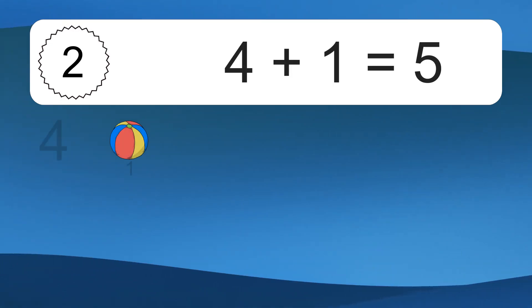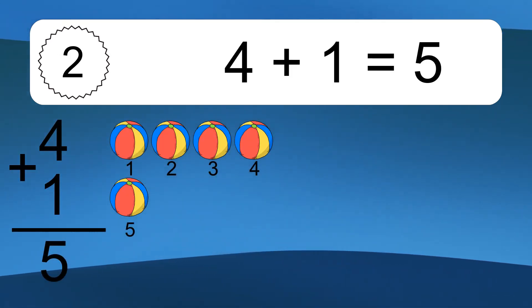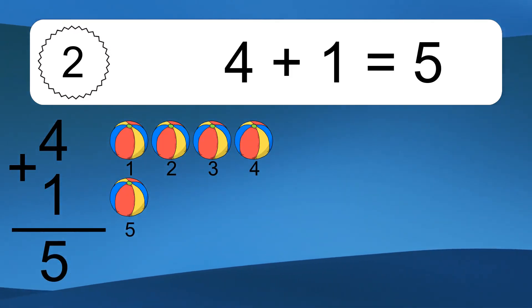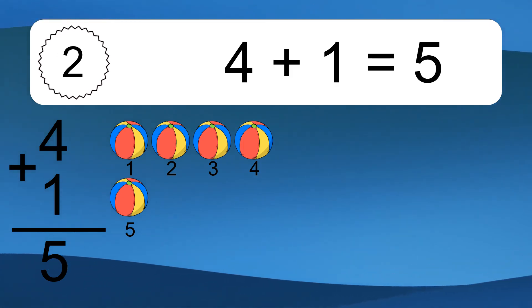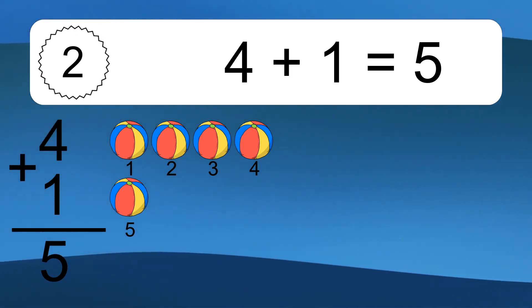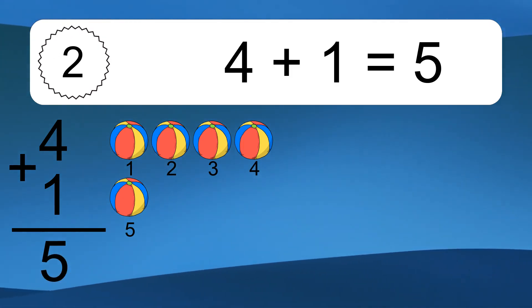4 plus 1 equals what? 4 plus 1 equals 5. Let's count it. 1, 2, 3, 4, 5.